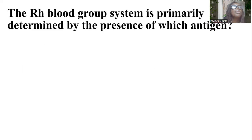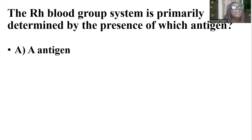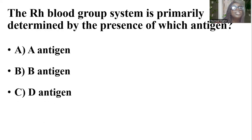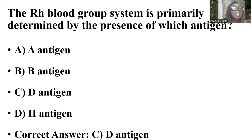The RH blood group system is primarily determined by the presence of which antigen? Options are A antigen, B antigen, D antigen, and H antigen. And the answer is C — D antigen.